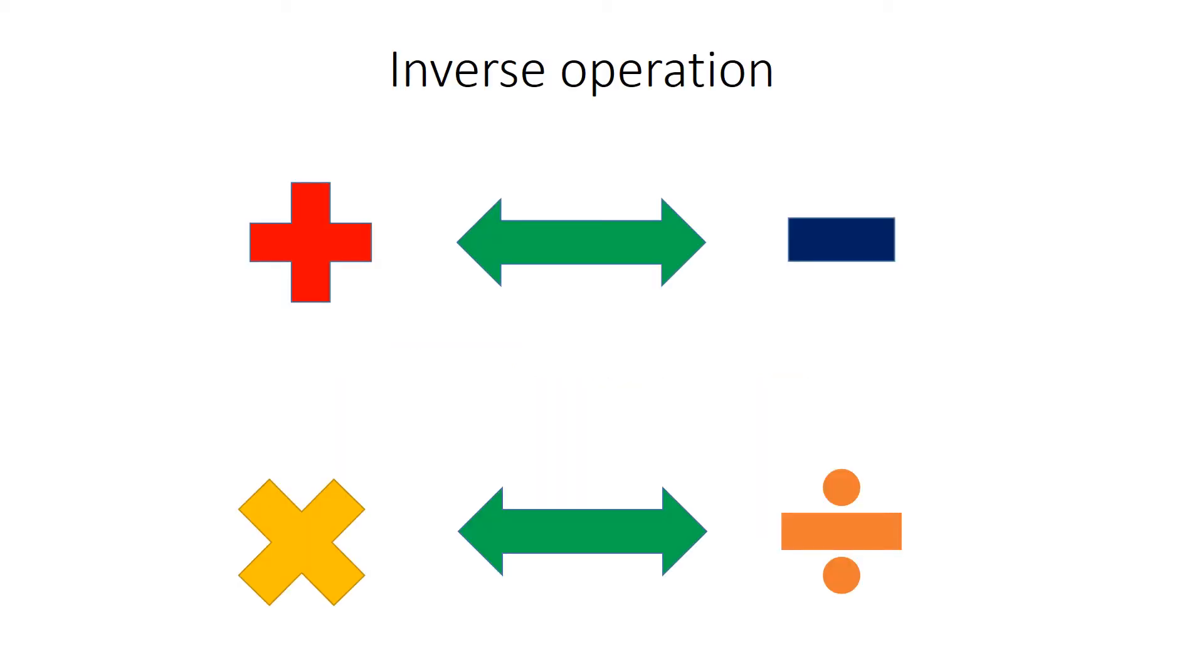So first of all the inverse operation, you need to know what that means. So we've got four operations: add, subtract, multiply and divide. And as you can see here, add and subtract are opposites, inverse operations, and multiply and divide are also opposites or inverse operations.